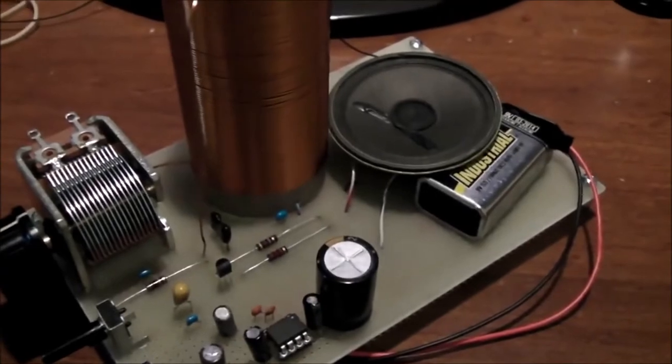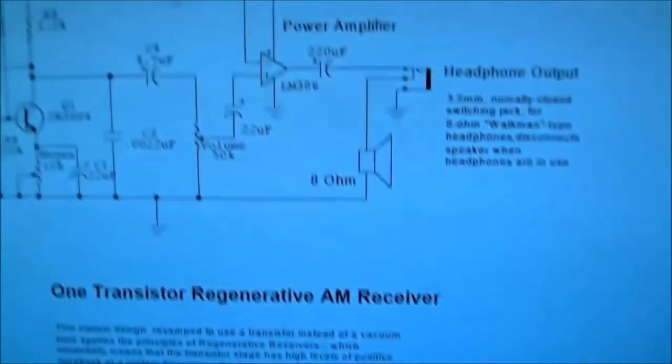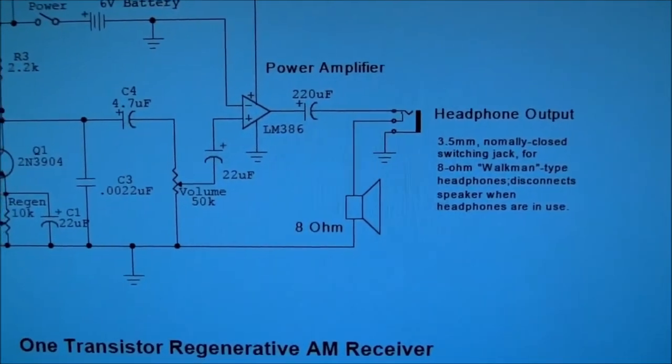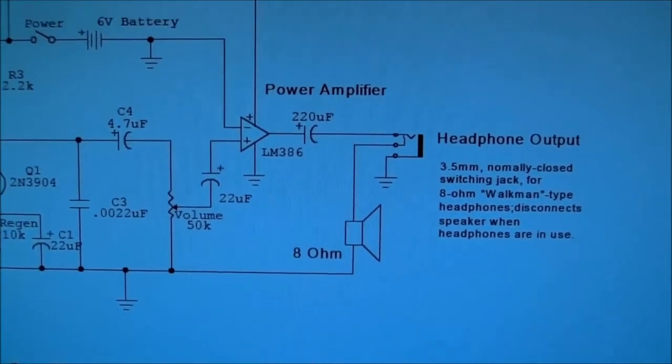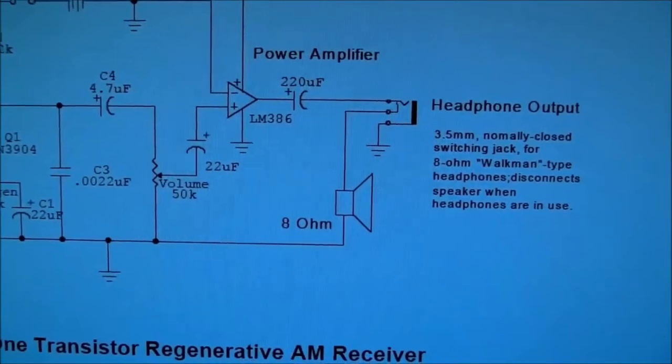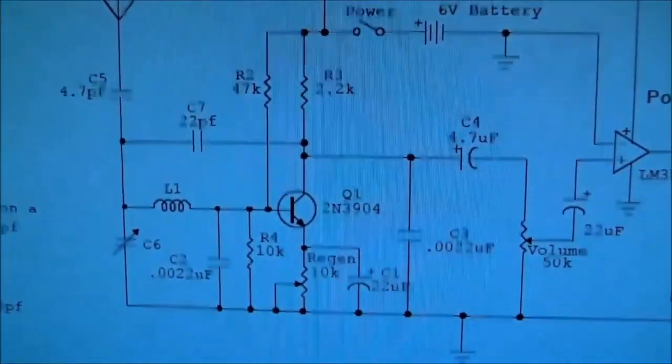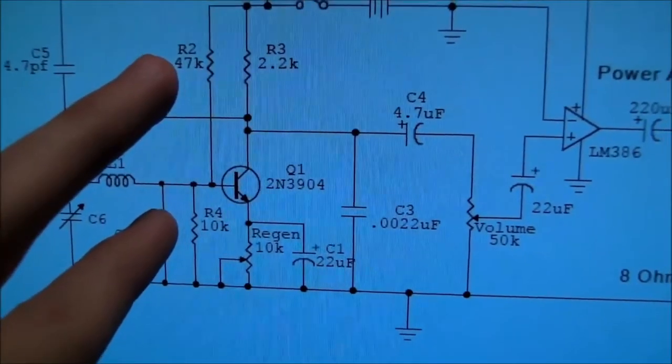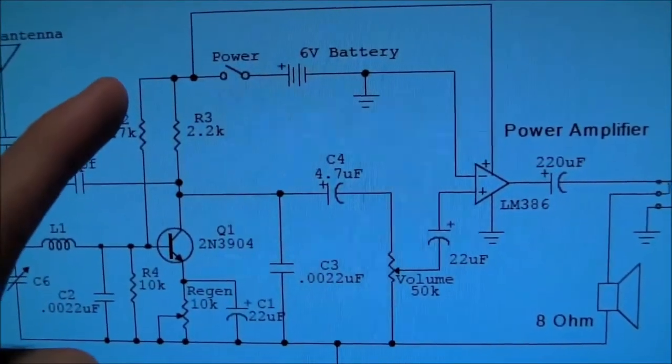So the nice thing about this design is that it does use the LM386 audio amp and you can just plug a standard 8 ohm speaker into it or standard earbud or whatever you have on hand. So going back into this design, you'll notice that for the biasing network on the transistor, we just have a simple resistor divider, which is okay if your supply voltage is very stable.